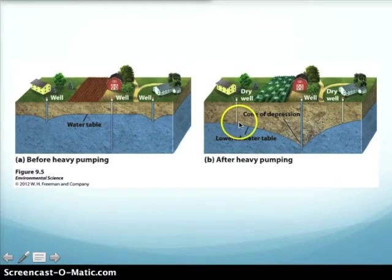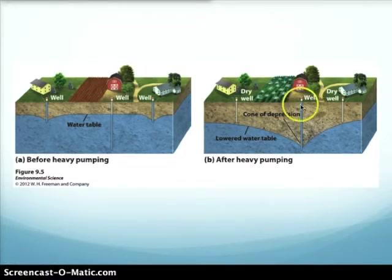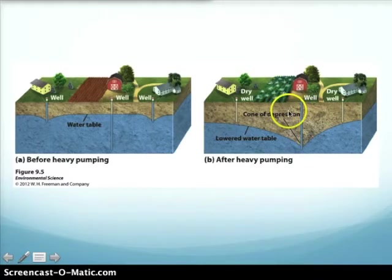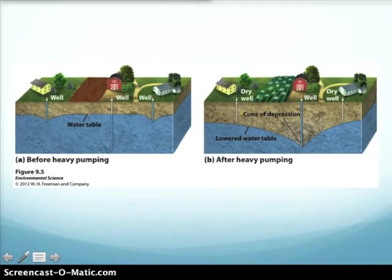Neighboring wells can run dry as a result of a cone of depression — something important to consider where most people rely on groundwater. During a drought, people on wells may not feel the need to conserve water, but your neighbors' wells may not be drilled as deep as yours, and you can lower the water table — especially during prolonged drought.